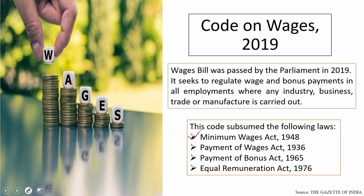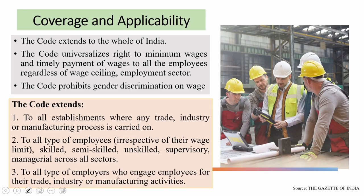The Minimum Wages Act 1948, the Payment of Wages Act 1936, the Payment of Bonus Act 1965, and the Equal Remuneration Act 1976. So this was an amalgamation of four major laws of the land till that period.